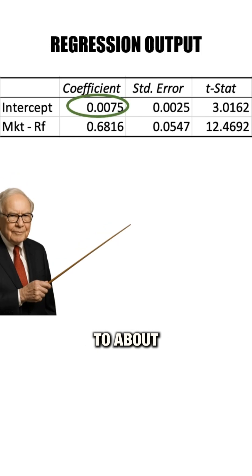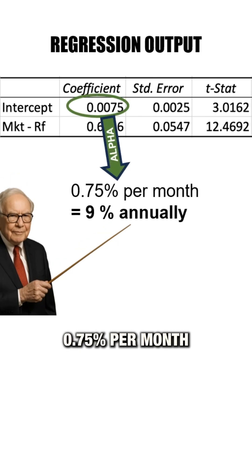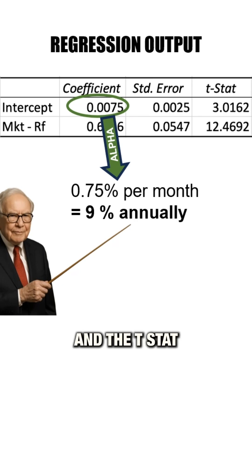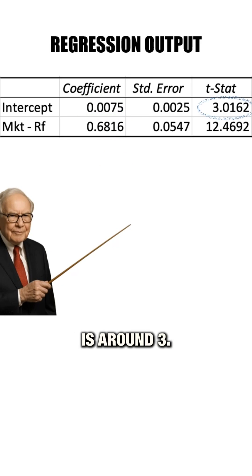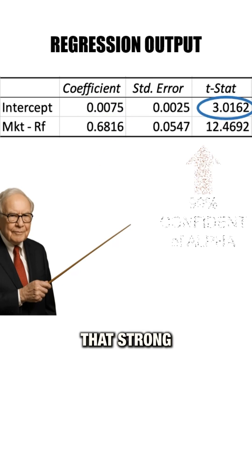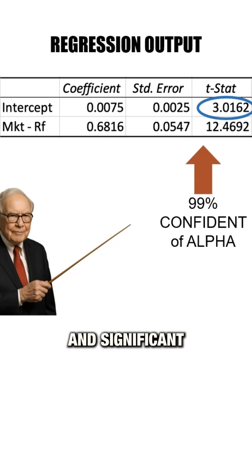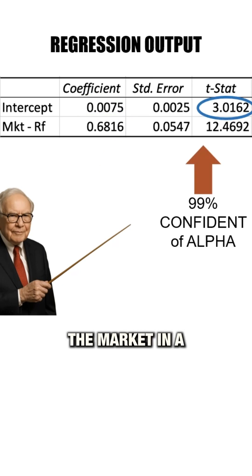Buffett's alpha comes out to about 0.75% per month, or 9% a year, and the t-stat is around 3. That's strong and significant evidence that he outperformed the market in a meaningful way.